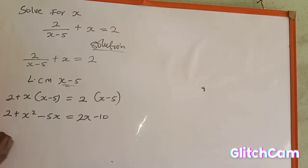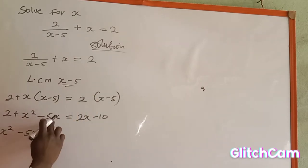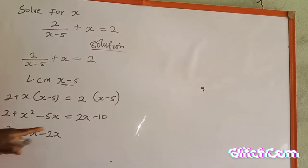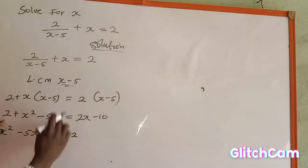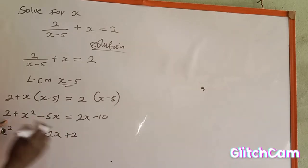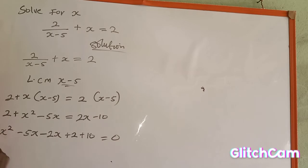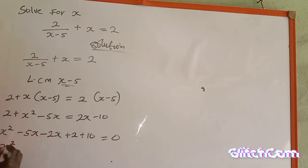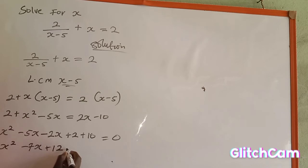Now I rearrange the equation. Bringing all terms to one side: s squared is the highest power term. Then minus 5s, and the positive 2s crosses over and becomes negative 2s. The constant 2 crosses over and becomes positive 10. Collecting like terms: negative 5s minus 2s gives negative 7s, and plus 2 plus 10 gives plus 12. So we have s squared minus 7s plus 12 equals zero.